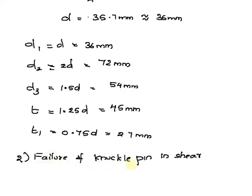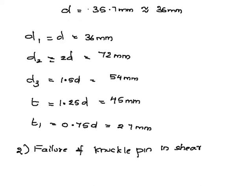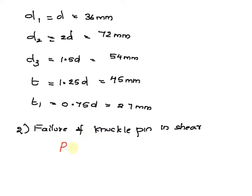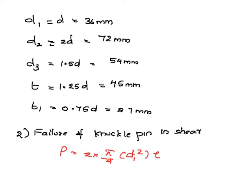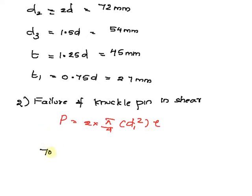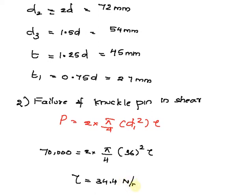Now checking failure of pin in double shear: we can write 70,000 is equal to 2 into pi by 4 into d1 square into tau. Substituting: 70,000 is equal to 2 into pi by 4 into 36 square into tau, and we get tau is equal to 34.4 Newton per millimeter square.